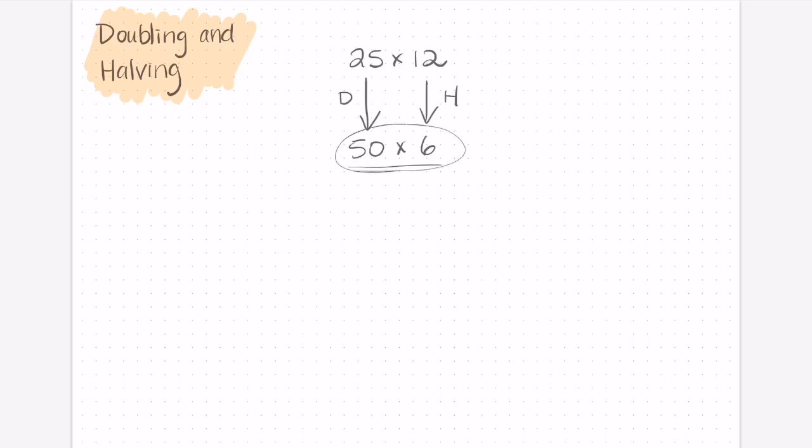This looks a lot less intimidating to solve than this. Now if we wanted, we could actually go one step further. Maybe this isn't quite simple enough yet for us. So we could double and half again. We could double the 50 to make 100 and then half the 6 to make 3. And now we have 100 times 3.